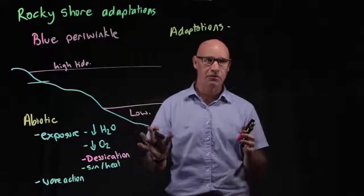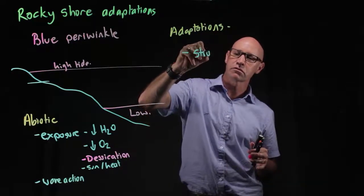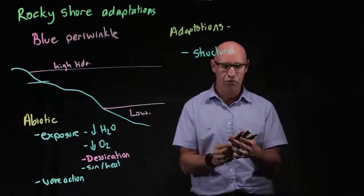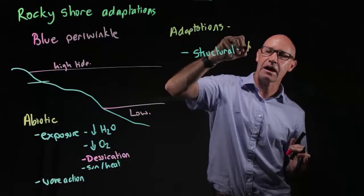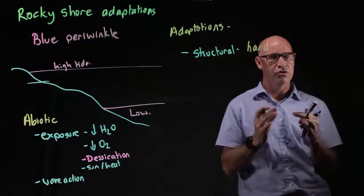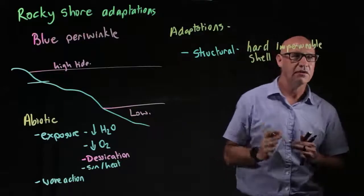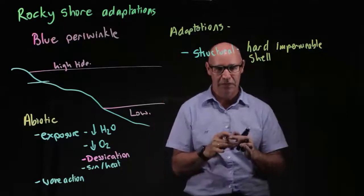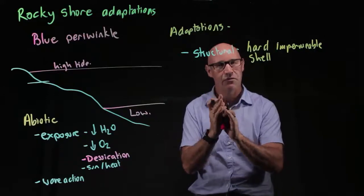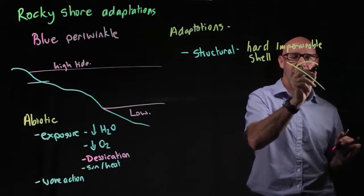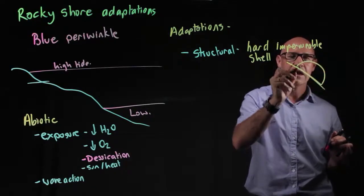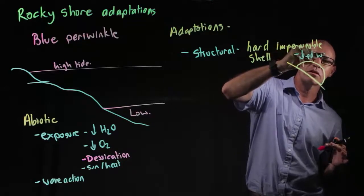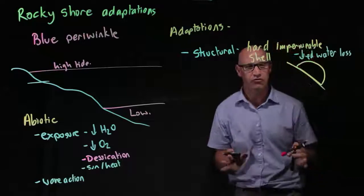Let's look at the different types of adaptations and specifically the blue periwinkle's adaptations. First, we've got structural or anatomical adaptations, which are the physical characteristics of an organism. For the blue periwinkle, it's got a hard shell that is impermeable to water. When it's out of the water, it hooks onto the rock, sucks onto the rock. This hard shell prevents water loss, so we have decreased water loss because of this impermeable shell.